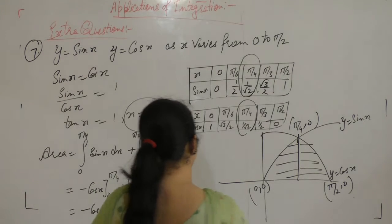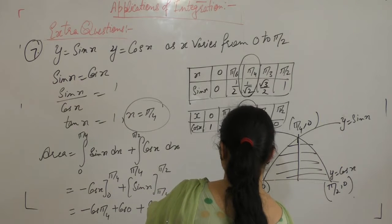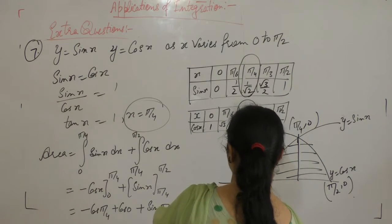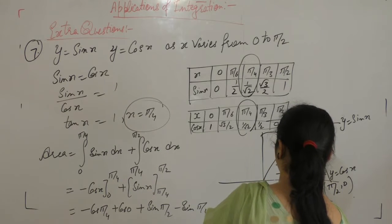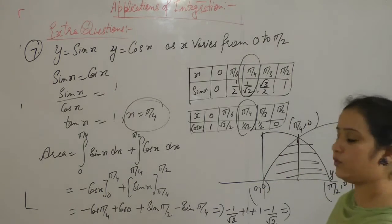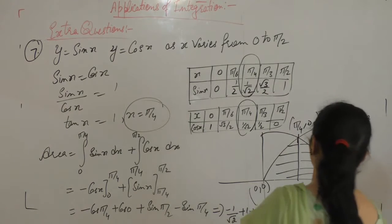Cos π by 4 is 1 by root 2, minus 1 by root 2, cos 0 is 1, sin π by 2 is 1, sin π by 4, so 1 by root 2, 1 plus 1, 2 minus 2 by root 2.